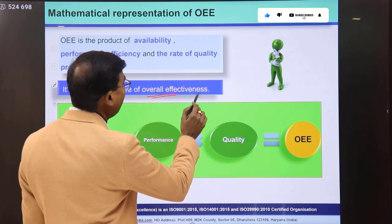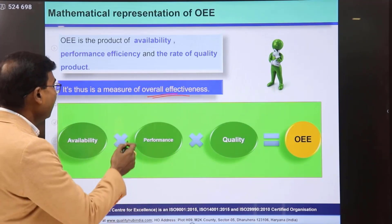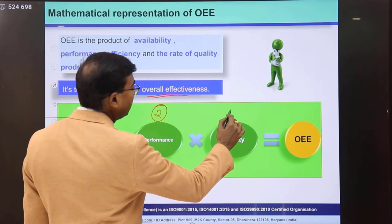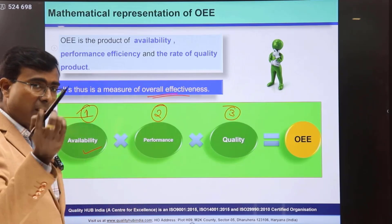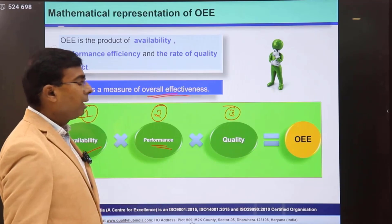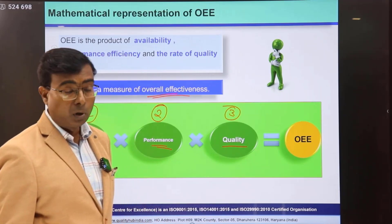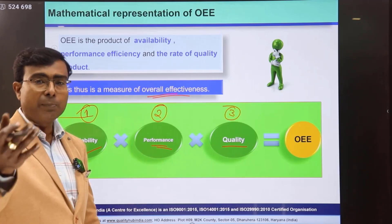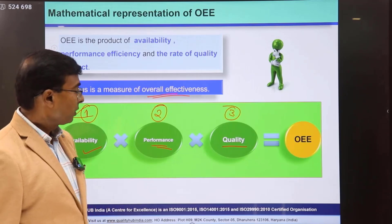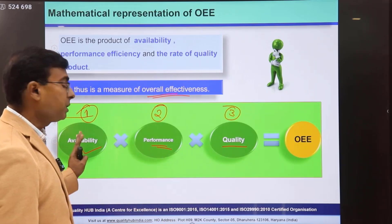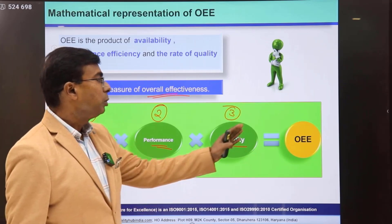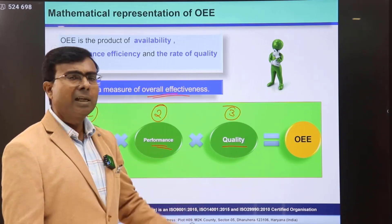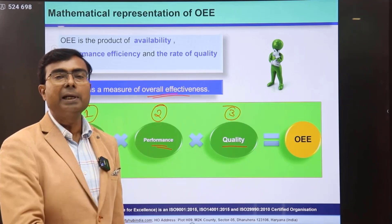Now, talking about the mathematical representation of OEE — how OEE can be calculated — it is basically the multiplication of three factors: the first is Availability of the machine, the second is Performance, and the third is Quality. Availability, performance, and quality should all ideally be 100%. If all three are 100%, your OEE would be 100%. But in practice, there will always be some issues in one or more areas that need to be analyzed and addressed through continual improvement.